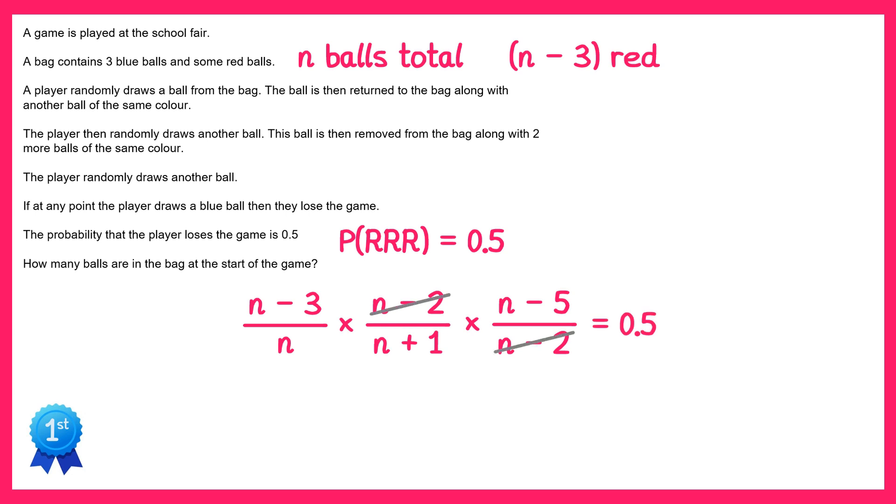Fortunately these n minus twos here will cancel out, so we're just left with this. We can write this as one single fraction, and then if we multiply both sides by this denominator n bracket n plus one, we end up with this.